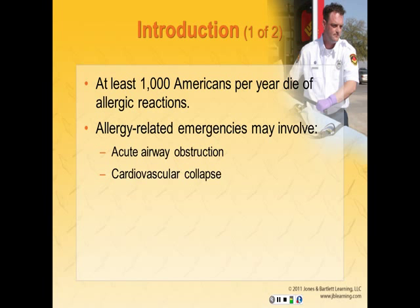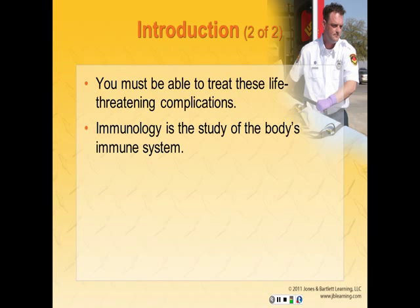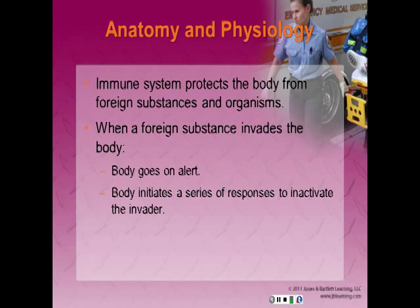At least 1,000 Americans per year die of allergic reactions. Allergy-related emergencies may involve acute airway obstruction and cardiovascular collapse, and you must be able to treat these life-threatening complications. You must also be able to distinguish between the body's usual response to an allergen and an allergic reaction. This chapter talks about immunology, which is the study of the body's immune system and the five categories of stimuli that may provoke an allergic reaction.